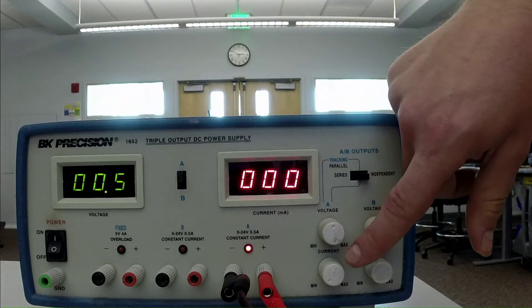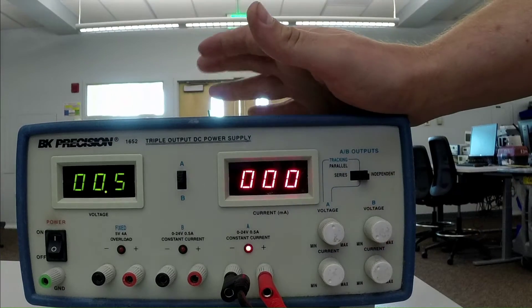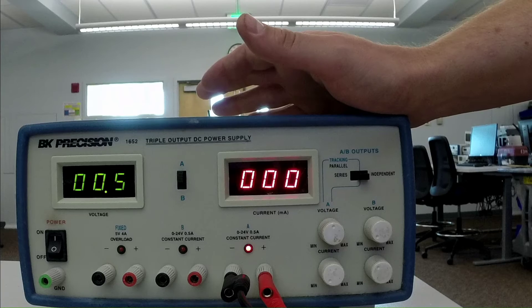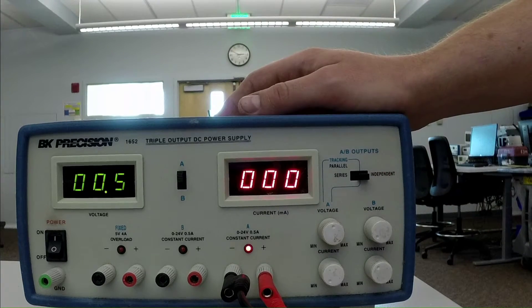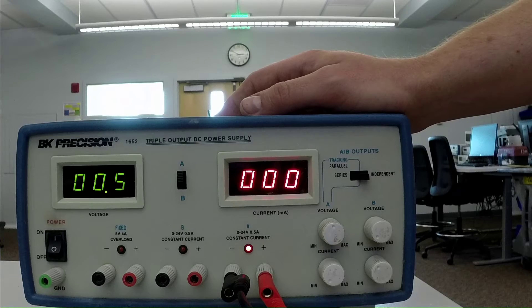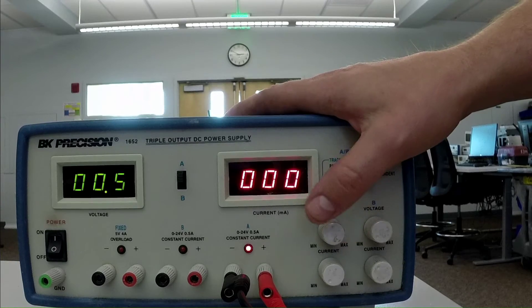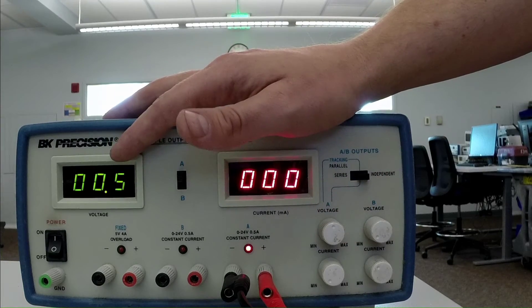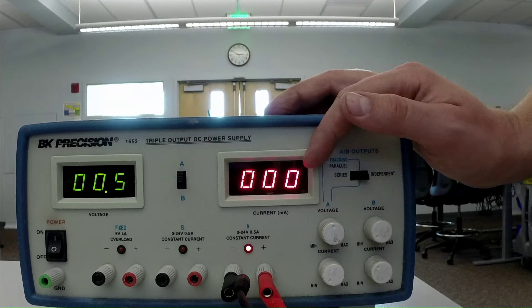And you notice our voltage is way lower now also. So essentially what I've done here is I've limited the current so we can't have a full 5 milliamps flowing through the resistor. And the resistor is trying to draw too much current for this current setting. So our voltage has to drop to accommodate the current limit that I've set.